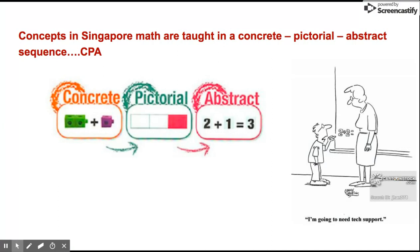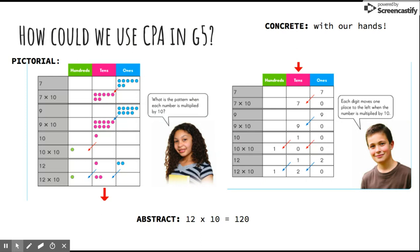We teach math concepts using CPA: concrete, pictorial, abstract. The concrete part is where students are actually touching with their hands — for example, using place value disks or blocks with a place value chart and physically moving them. Afterwards, I would do the pictorial stage: a drawing similar to the concrete example. Lastly, I use abstract, where I use numerals and operation signs, which you can see at the bottom of this slide.